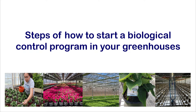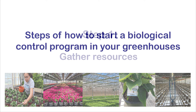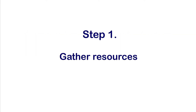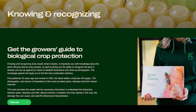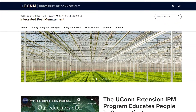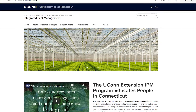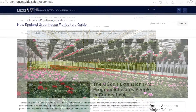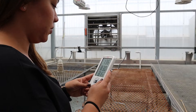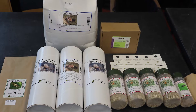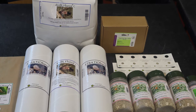Here are some steps on how to start a biological control program in your greenhouse. First, gather resources — it takes time and commitment to learn the biology and life cycles of the insects, crops, and pests and their natural enemies. You must also become familiar with the optimal environmental requirements, like temperature and relative humidity, needed by the different natural enemies.